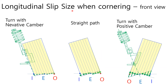Here we have a front view of the front left tire. Let's think about the longitudinal slip size during a right turn for two types of camber — negative and positive. With negative camber, referring to the cone movement explained earlier, the wheel tends to bend in the same direction as the steering angle, because that is the natural movement of a tire with negative camber. That means the direction due to camber and due to steering is the same. Therefore, tire slip size is reduced compared with that in the straight path, as shown in the left picture.